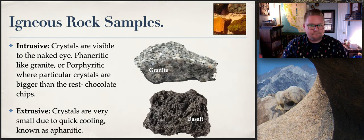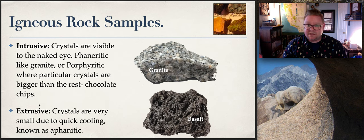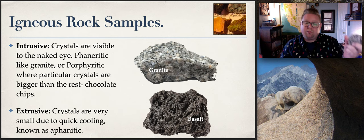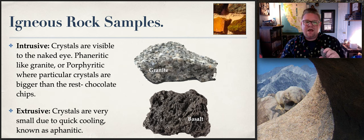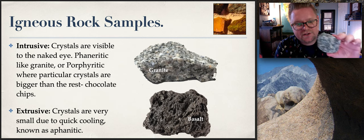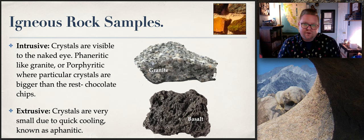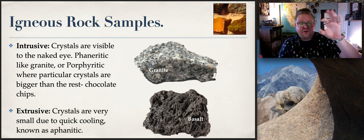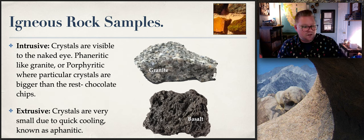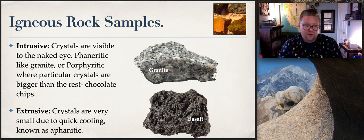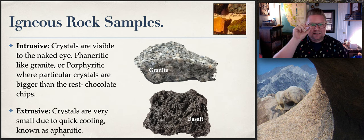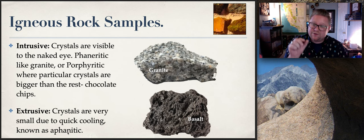Looking at igneous rock samples: intrusive crystals are visible to the naked eye. Phaneritic — such as granite — means the crystals are pretty much the same size and you can see large clusters. Porphyritic means there are very large crystals called xenoliths scattered throughout, like big chocolate chips in a cookie. Extrusive rocks have very small crystals due to quick cooling — aphanitic, like ants: they're so small I can't observe them with the naked eye.